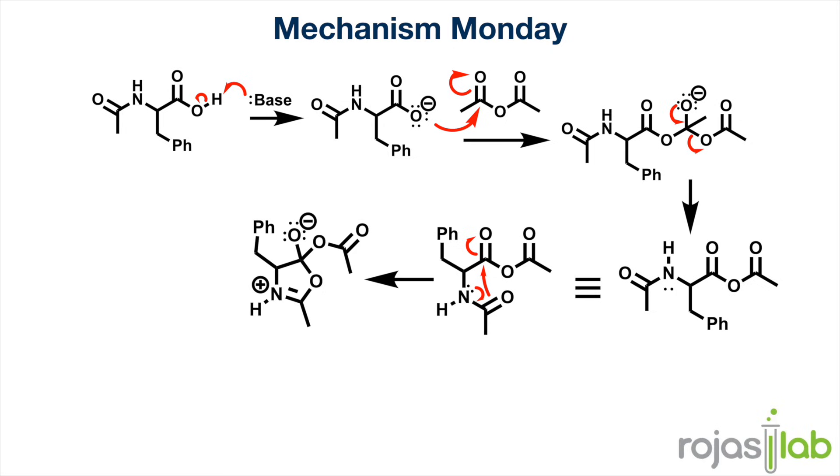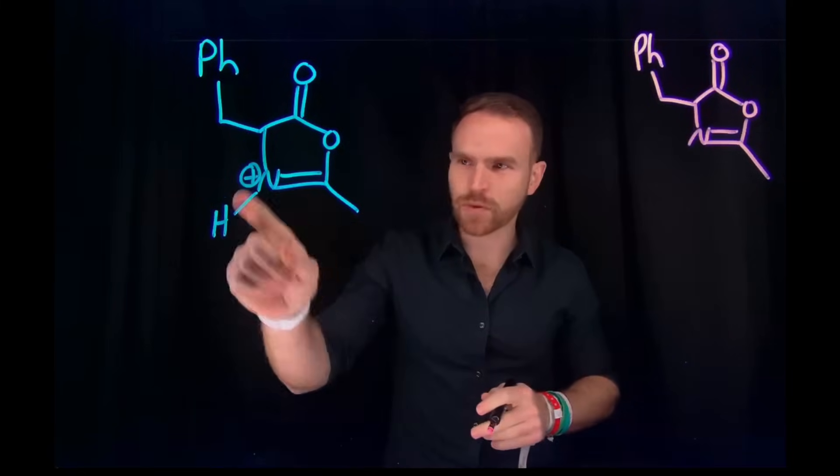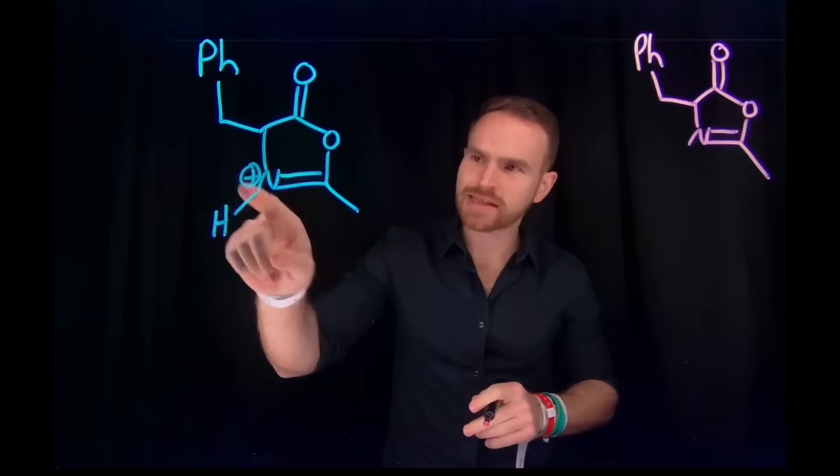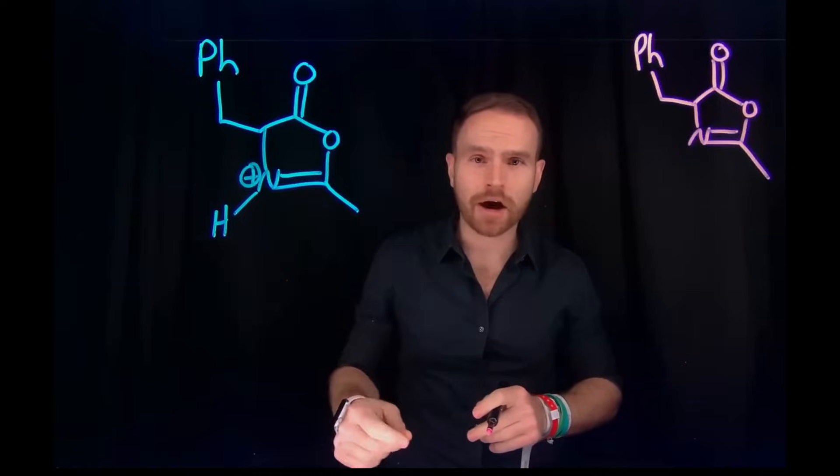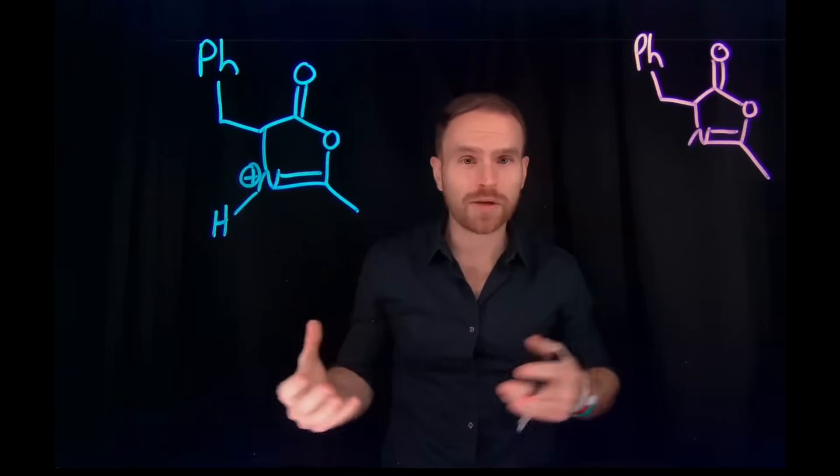Again, this kicks up the pi electrons to the oxygen, allowing those electrons to later come back down and kick off acetate as a leaving group again. And that actually generates this reactive intermediate. And notice that this is effectively an iminium ion that's a part of that closed ring that we just generated.